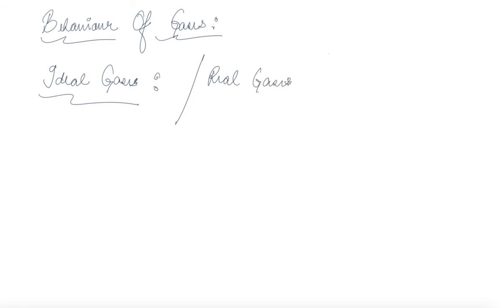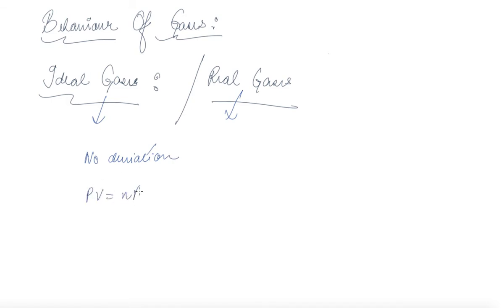In this chapter we will be discussing the behavior of gases. There are two types of gases: ideal gases, which we consider in calculations, and real gases. Physically, an ideal gas shows no deviation and follows the formula PV = nRT.